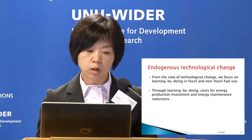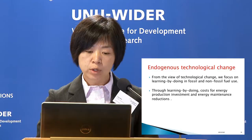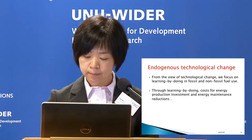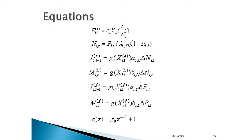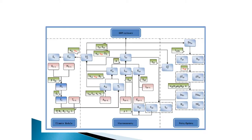In the induced technological change component, we introduced the learning-by-doing mechanism into the IAM model. Through learning-by-doing, costs for energy production investment and energy maintenance are reduced. Here are the equations in this model. Finally, we have an overview of the relationships between parameters and variables of our MRACE model.